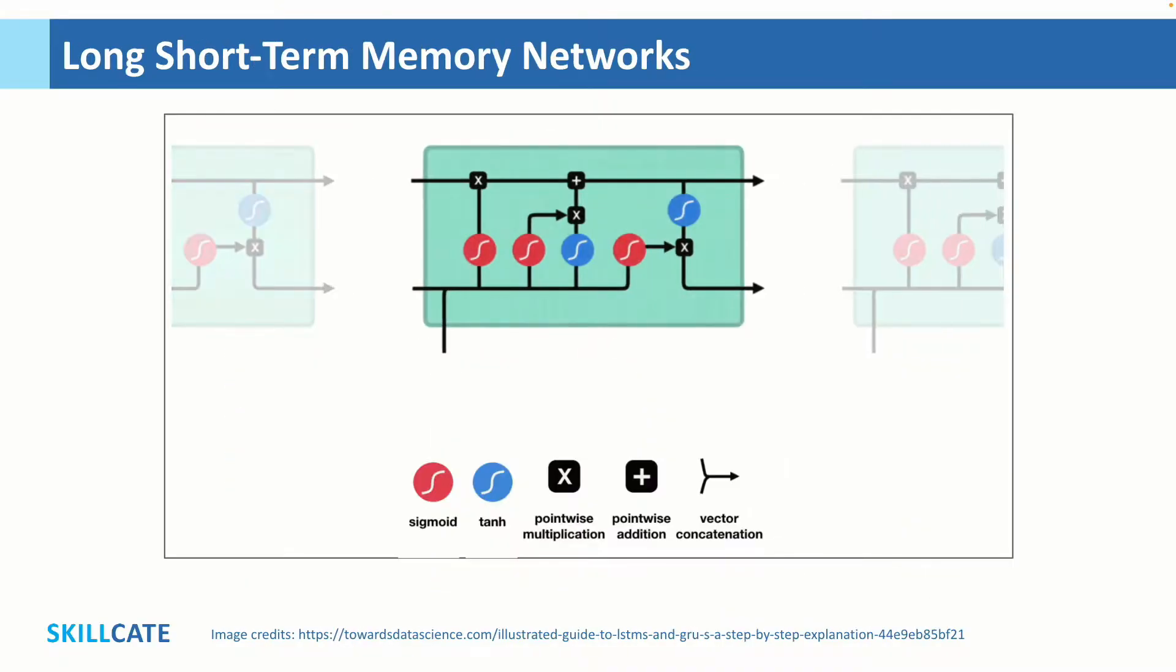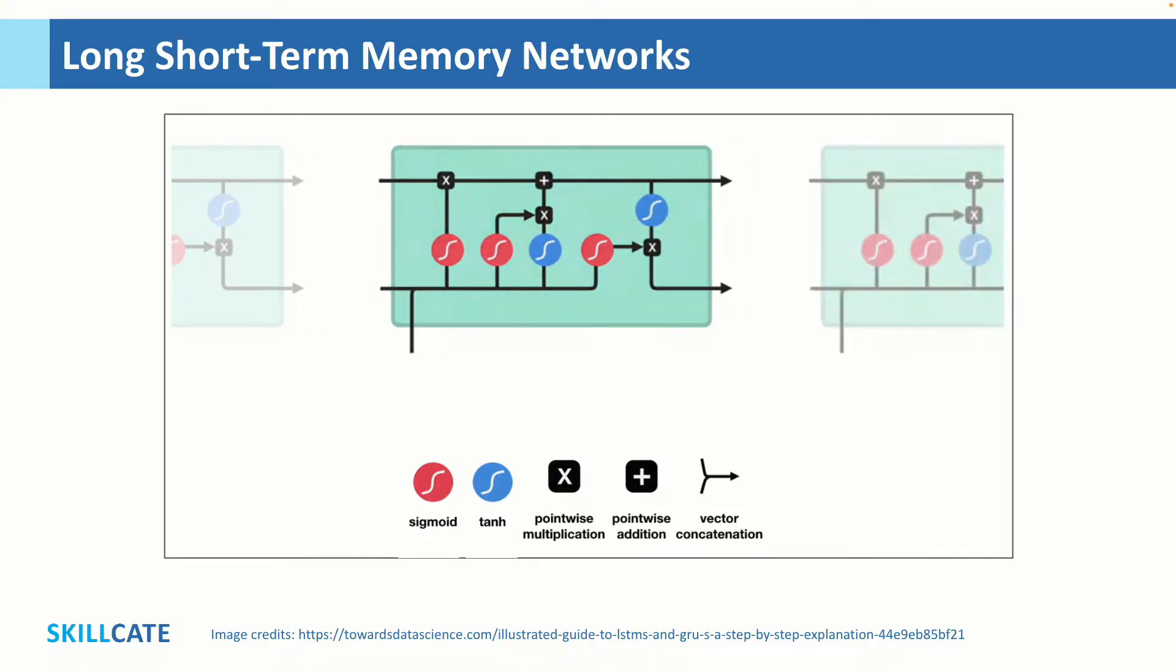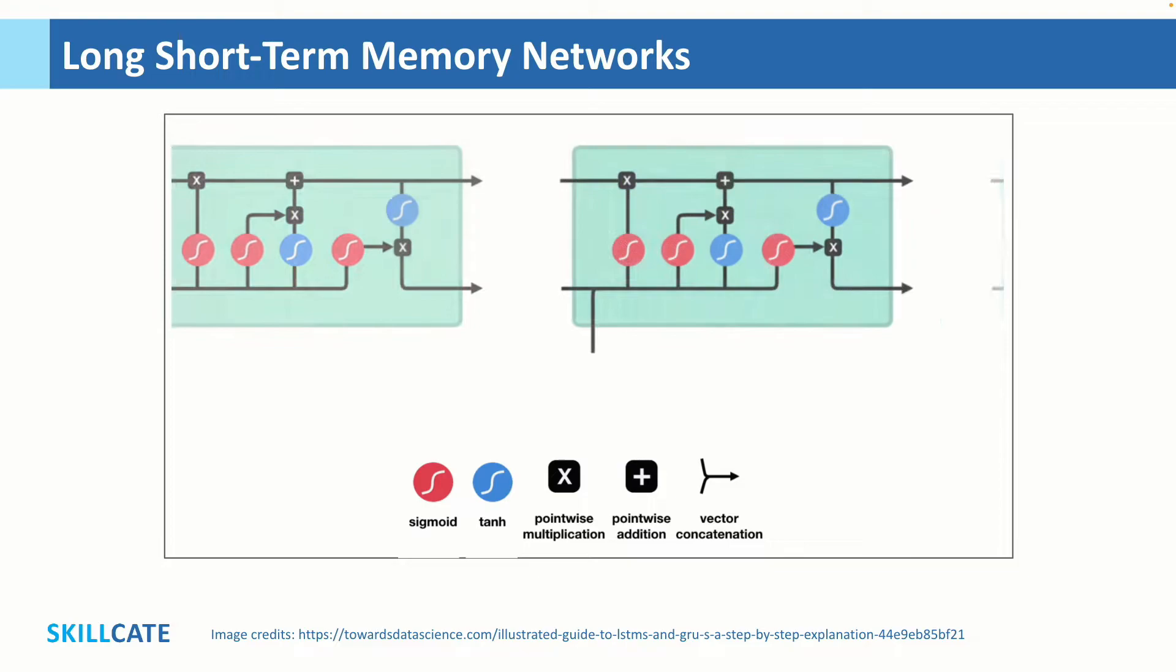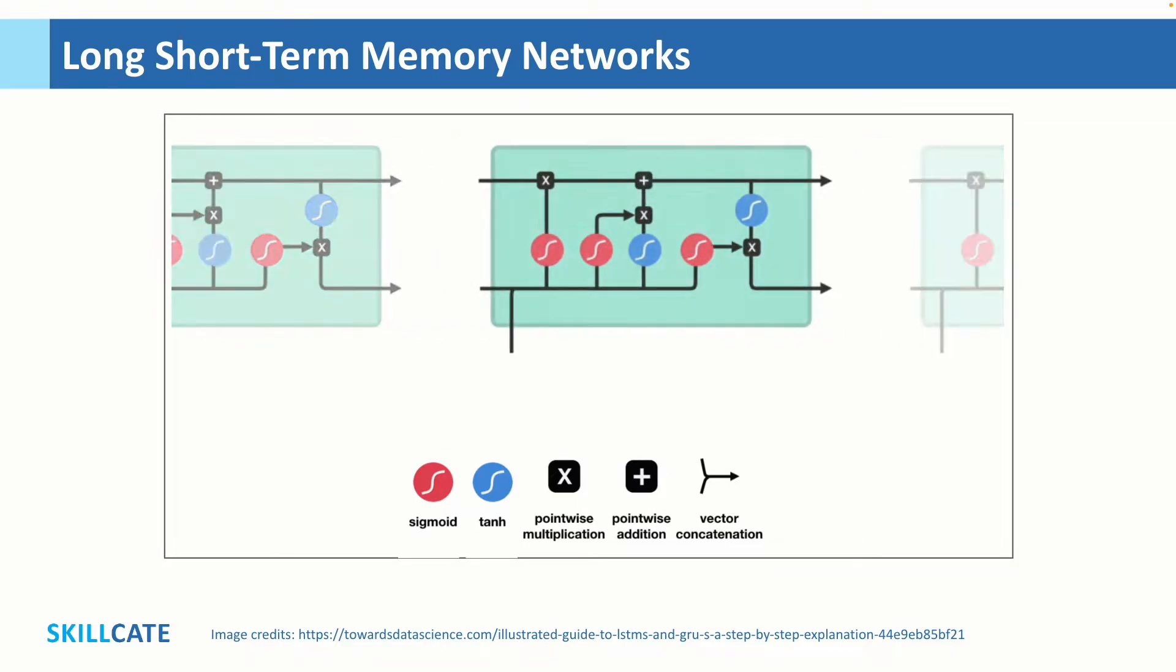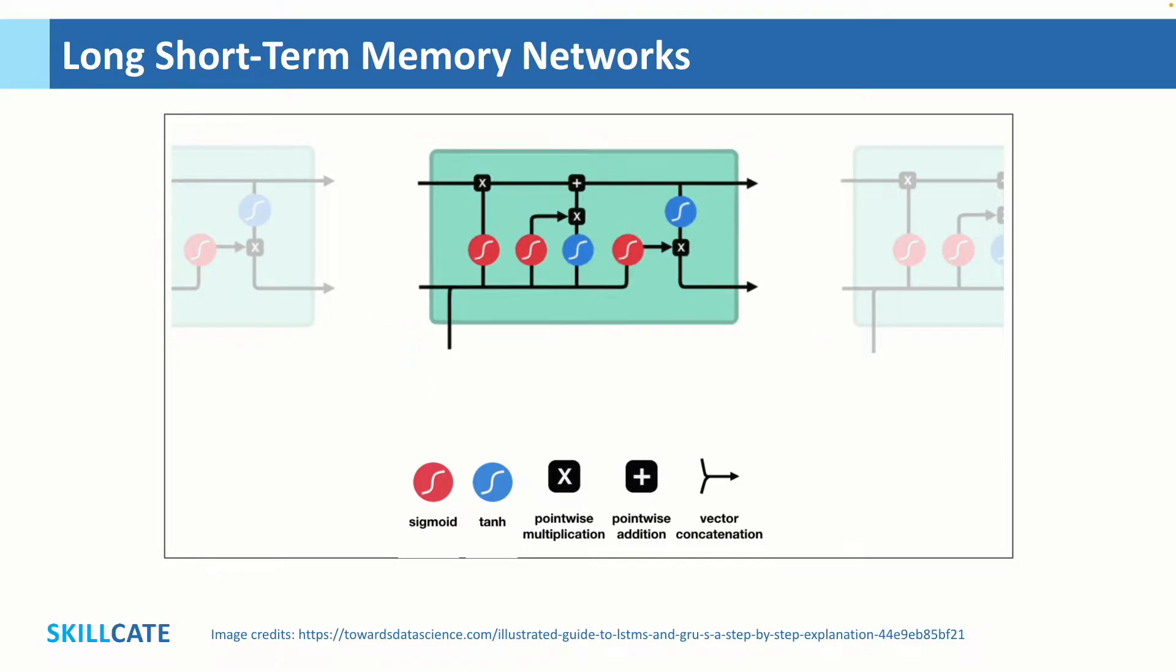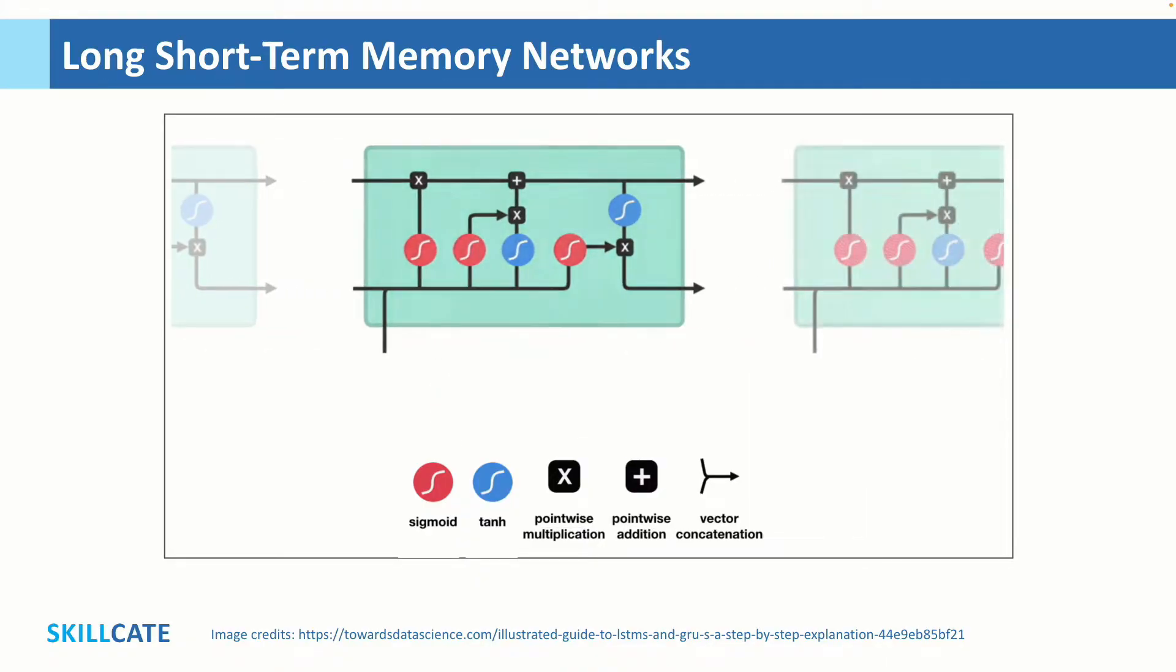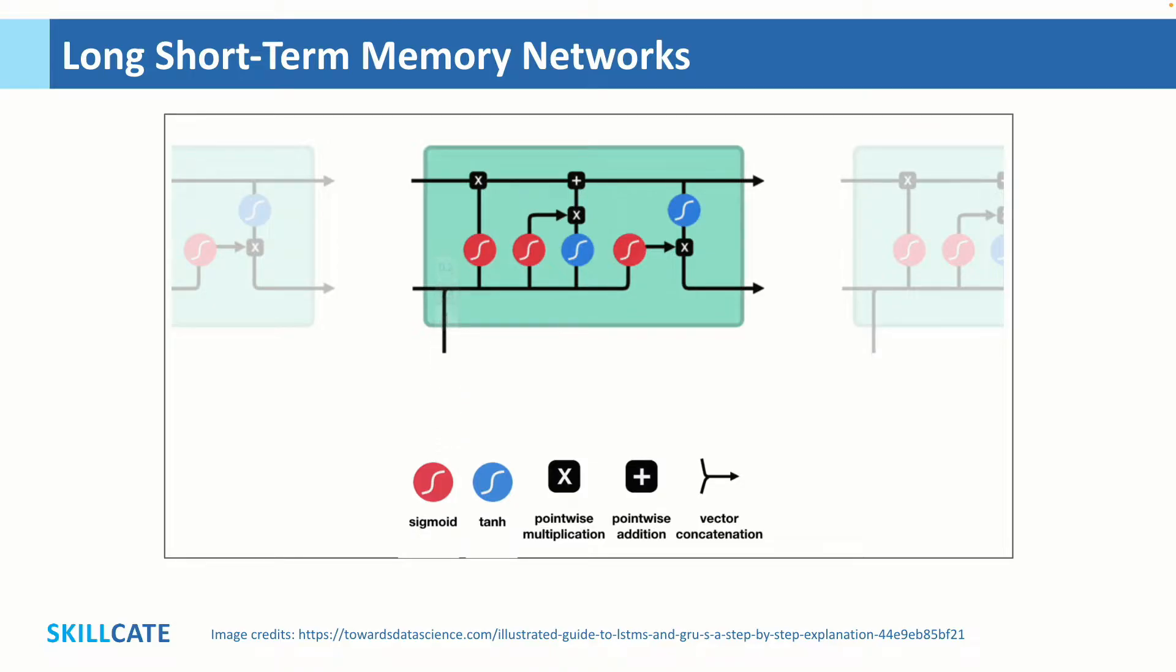And one such approach is long short term memory networks or simply LSTM. LSTM is a variant of recurrent neural network or RNN and is proven to work well with learning and remembering patterns across time. Unlike RNNs, LSTMs are explicitly designed to handle long term dependency problems. Remembering information for long periods of time is practically their default behavior, not something they struggle to learn. Now, let me give you an intuitive understanding of how LSTMs operate.